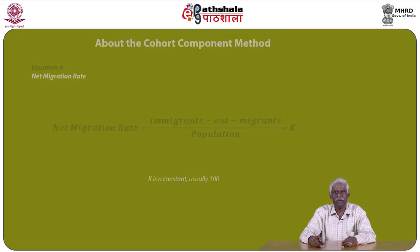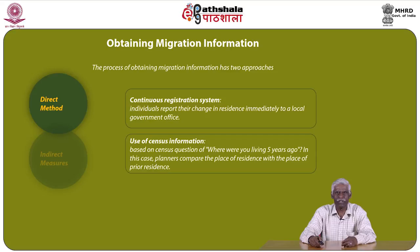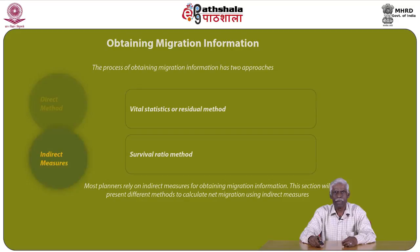Obtaining migration information has two approaches: the direct method and indirect measures. With the direct method, a continuous registration system exists where individuals report their change of residence to a local government office, or census questions such as 'Where were you living 5 years ago?' are used. In the case of indirect measures, vital statistics, the residual method, or the survival ratio method are widely used. Most planners rely on indirect measures for obtaining migration information.